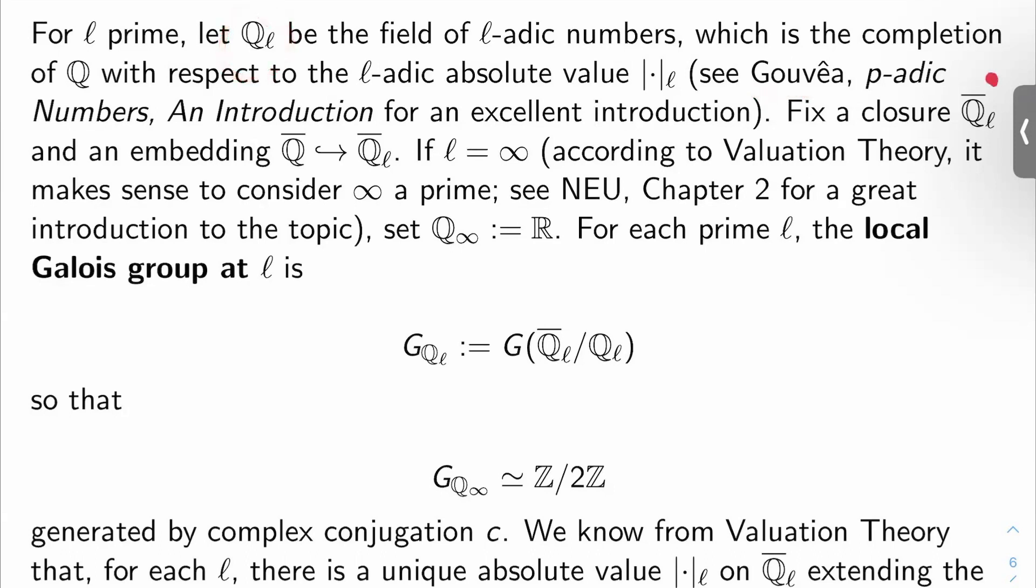and we'll take an embedding of Q-bar into Q-bar_ℓ. If ℓ is infinity, and according to valuation theory, it does make sense to consider infinity as a prime. It corresponds to the usual absolute value, basically. You can see Neukirch's chapter two for a great introduction to this, or you can also see Clark's notes, Pete Clark's notes, algebraic number theory two, I think they're called.